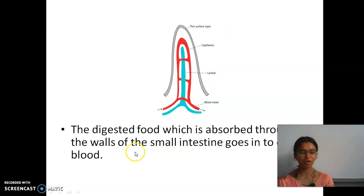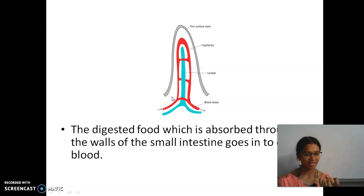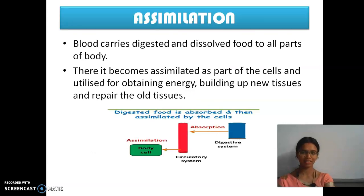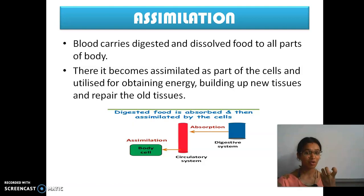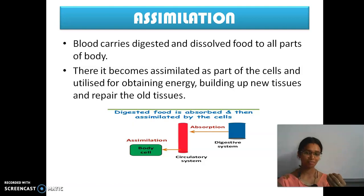The digested food which is absorbed through the walls of the intestine goes into our blood. After entering the small intestine, the blood carries it away. It goes into the blood. The digested food is absorbed by the walls of the intestine and given to the blood.